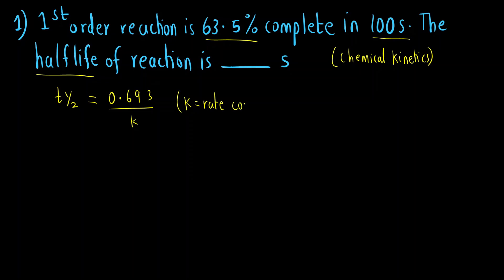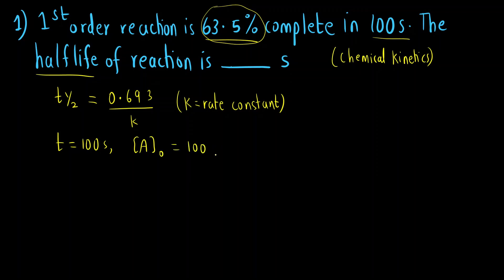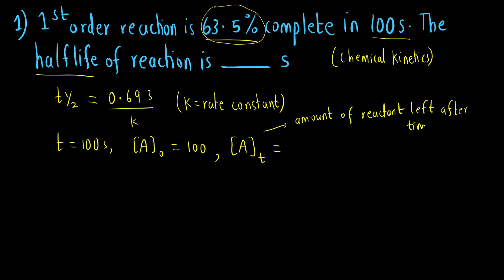We have to first find out the rate constant because its value is not given to us. What is given is that 63.5% of the reaction is complete in 100 seconds, so time T is 100 seconds. Let's consider the initial concentration is 100. After 100 seconds, 63.5% has reacted, so the amount of reactant left is 36.5%.